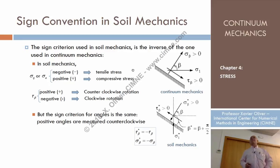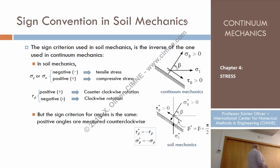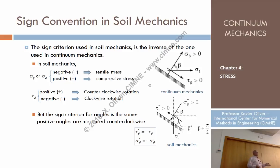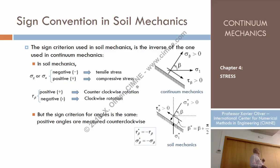Let me tell you something about soil mechanics. I'm teaching you continuum mechanics and there is a universal convention in continuum mechanics. Continuum mechanics is more theoretical because it's used not only by engineers — many physicists and other disciplines in science, including astrophysics, use continuum mechanics. The sign criterion used so far, both for the stress state and for the Mohr circle, is the one from continuum mechanics.